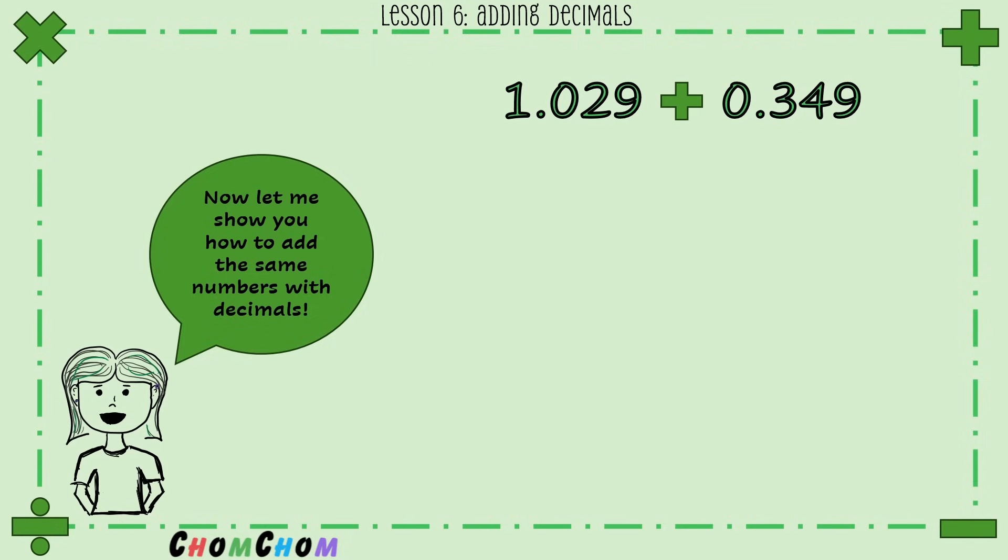Now let's see what these decimals add up to. We have 1.029 plus 0.349. And what do we call that zero here? We call it a placeholder zero, just so we can line up the one with the zero here. It is completely optional but I prefer it. So first we have 9 plus 9 which is 18, and we carry the one. 4 plus 2 is 6, plus 1 is 7.